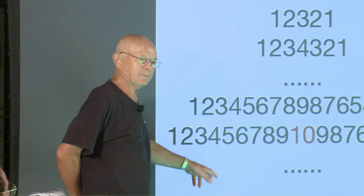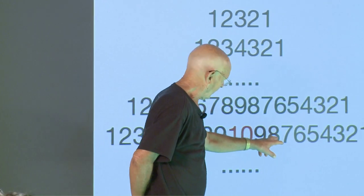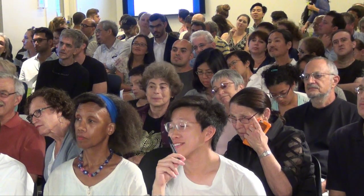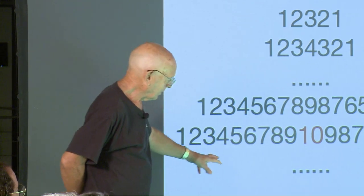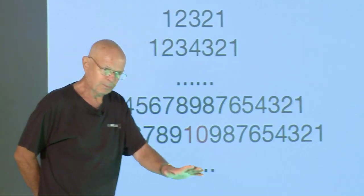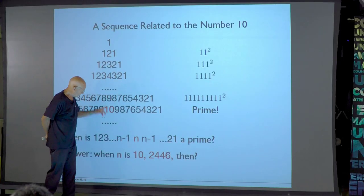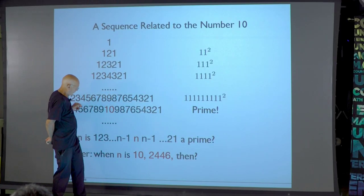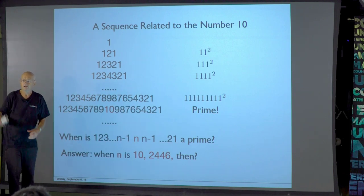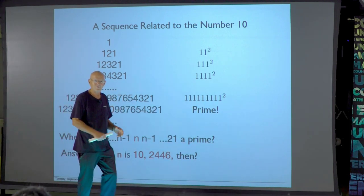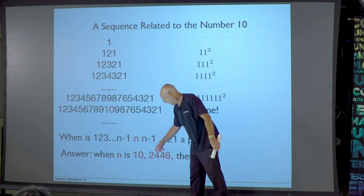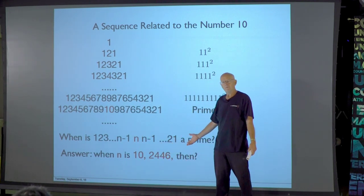And then you can keep going. What if we go 7, 8, 9, 10, 11, 10, 9, 8, 6, down to 1 — do you get a prime? No, you don't get another prime. Last year, someone whose last name is Gupta found the next time you get a prime is if you go all the way out to 2, 4, 4, 6, and then down to 1 — you get a prime. That's about 17,000 digits. So we've got the beginning of a sequence: 10, 2, 4, 4, 6. What's the next term? We don't know.